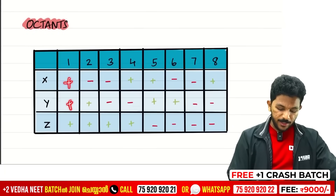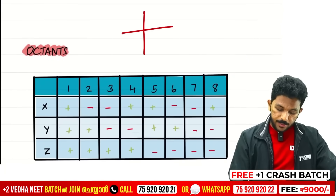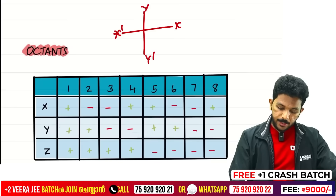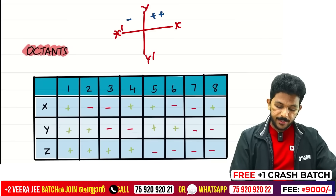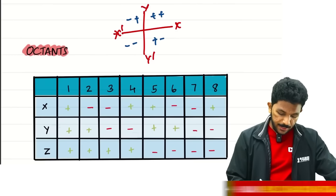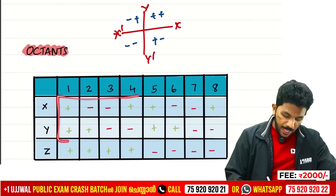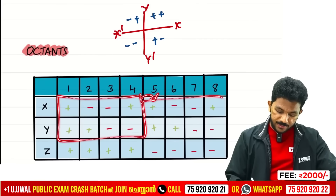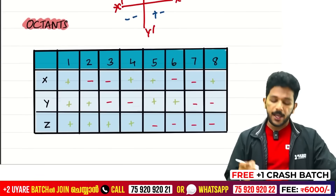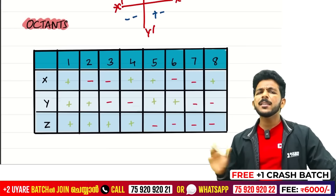The signs in octants: first octant is plus plus plus (X, Y, Z all positive). In the second octant, X is minus. The octant signs for X, Y, Z are: plus plus plus, minus plus plus, minus minus plus, plus minus plus for Z positive; and then plus plus minus, minus plus minus, minus minus minus, plus minus minus for Z negative.